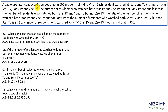Now let's start. A cable operator conducted a survey among 600 students in Indra Bihar. Each resident watched at least one of the TV channels — so there is no case where a resident watches none. The three TV channels are Star TV, Sony TV, and Zee TV. The number of residents who watched both Star TV and Zee TV but not Sony TV is one less than the number who watched both Star TV and Sony TV but not Zee TV.